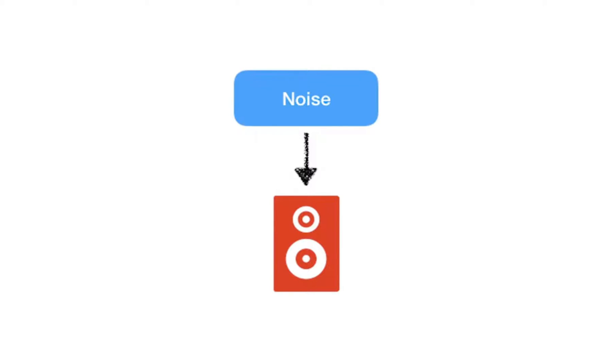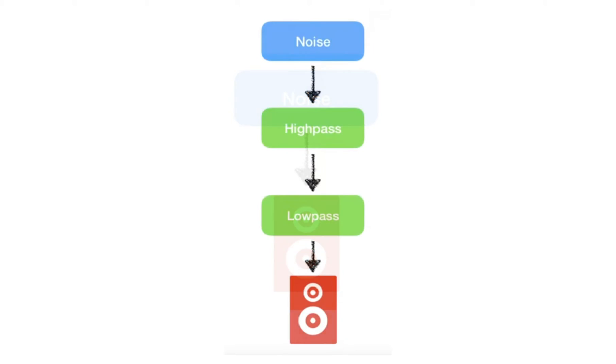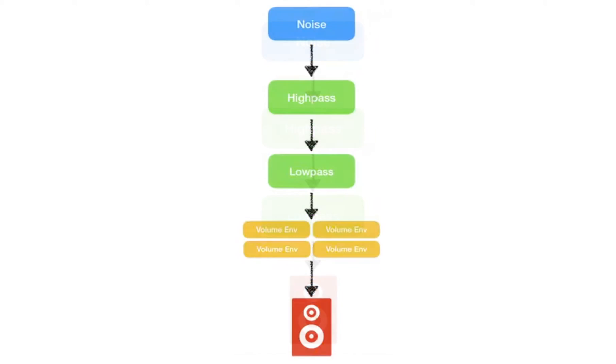We put in a high and low filter sequentially. Then the important thing for the clap is a set of several volume envelopes that are triggered in quick succession.